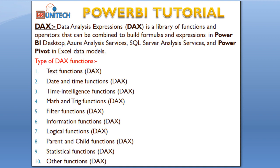Next are information functions. These functions look at a table or column provided as an argument to another function and tell you whether the value matches the expected type. For example, the ISERROR function returns either true or false — true if the value contains an error, otherwise false.